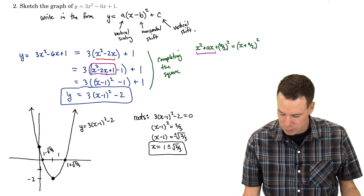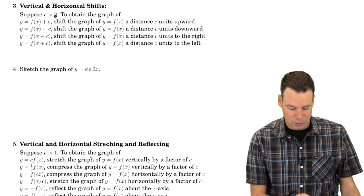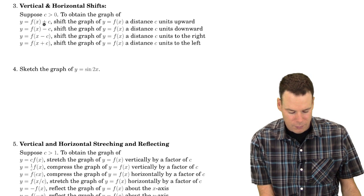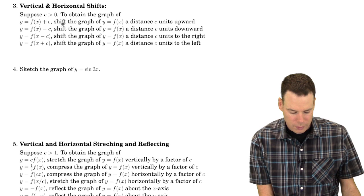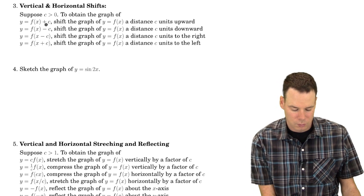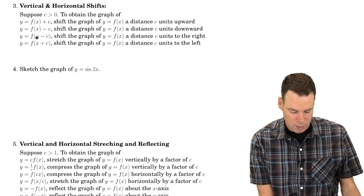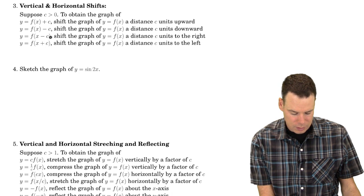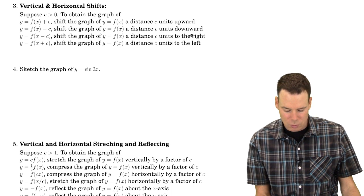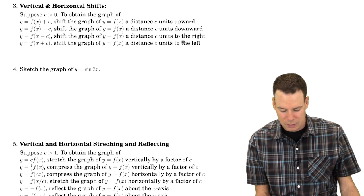Let's summarize vertical and horizontal shifts, supposing c is positive. To obtain the graph of f(x) plus c, shift the graph of y equals f(x) upward c units — a vertical shift up. Subtracting c gives a vertical shift down. For f(x minus c), that shifts the graph c units to the right. For f(x plus c), it shifts c units to the left.